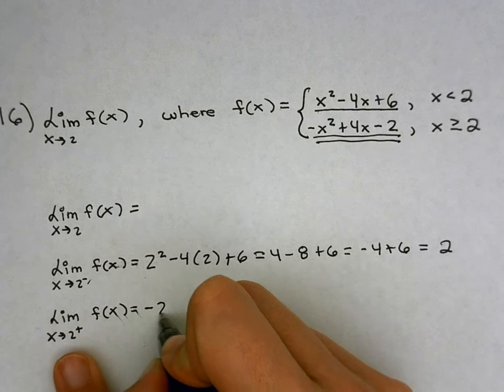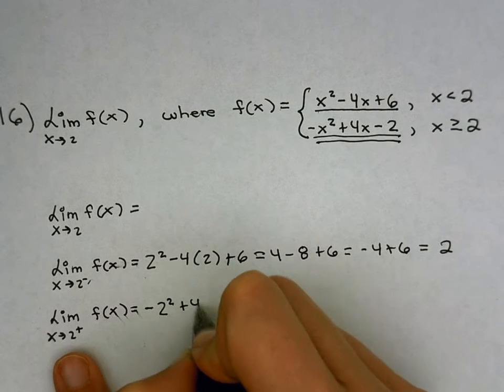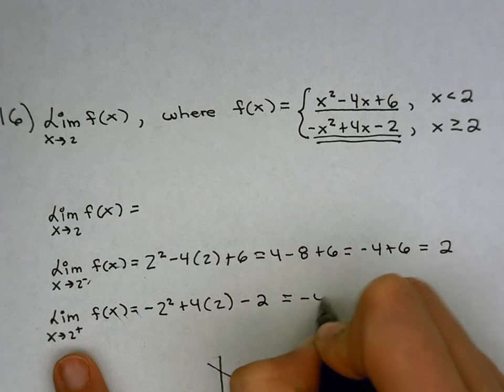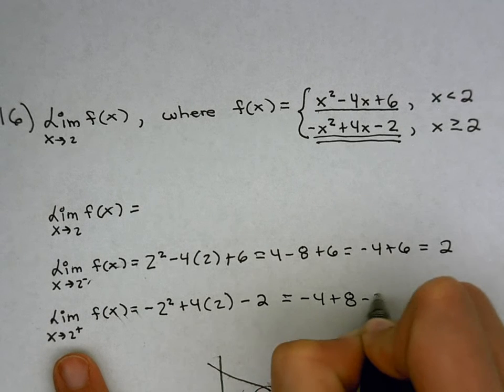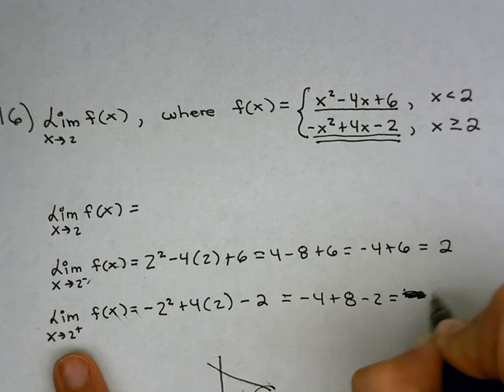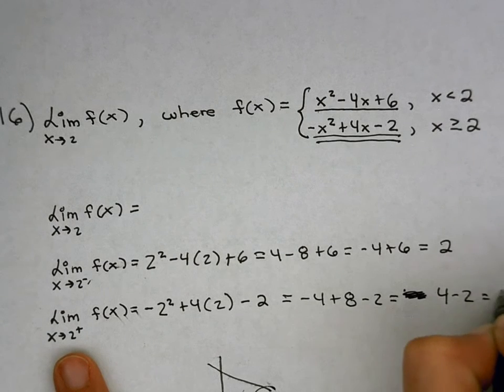So let's plug in 2 into that bottom function. I get negative 4 plus 8 minus 2, which is 4 minus 2, which is 2.